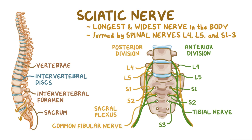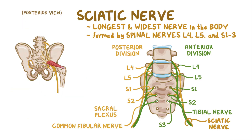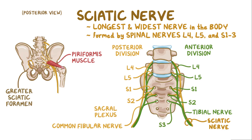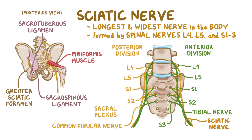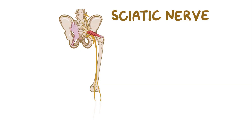These two nerves are bound together by connective tissue and make up the sciatic nerve. The sciatic nerve then passes beneath the piriformis muscle and through the greater sciatic foramen, which is an opening formed by the pelvic bone, sacrospinous, and sacrotuberous ligaments. It then travels down the back of the thigh to the back of the knee, where it splits into the tibial and common fibular nerves.